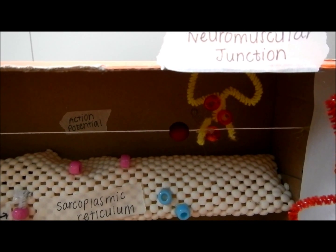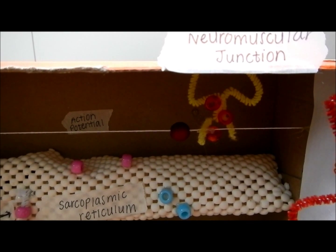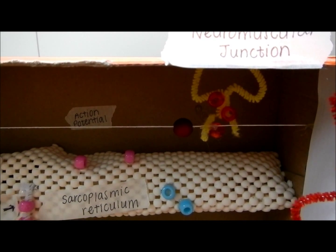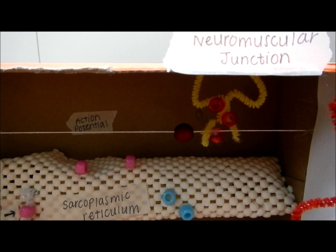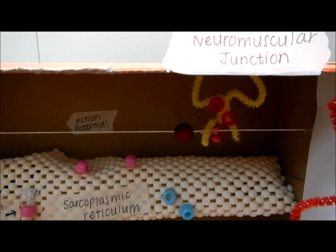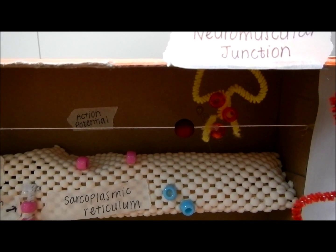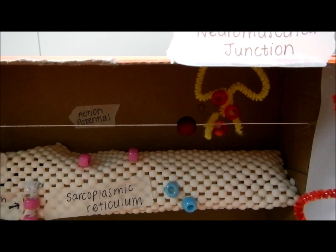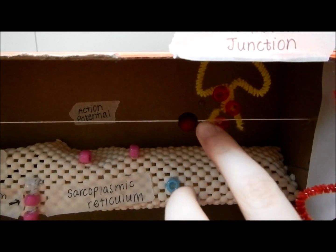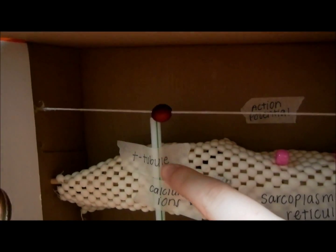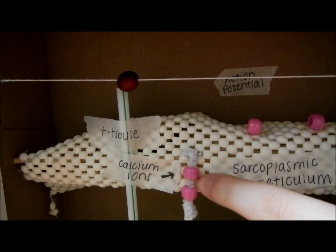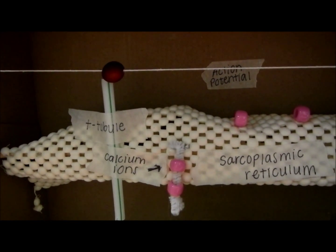When the brain signals muscle movement, nerves send an action potential along the motor neuron and the signal will use neurotransmitters to reach the sarcolemma of the muscle. The action potential will travel down the T-tubules and actively transport calcium ions from the sarcoplasmic reticulum.